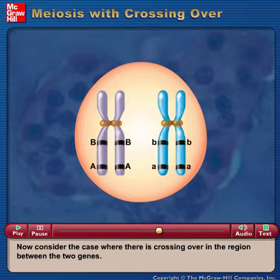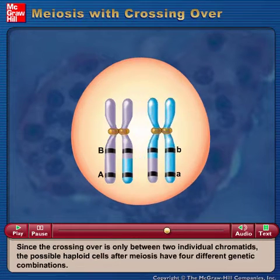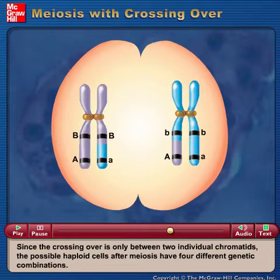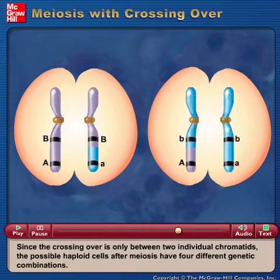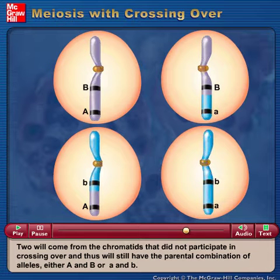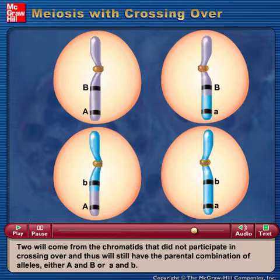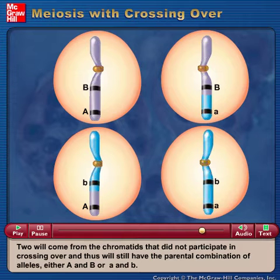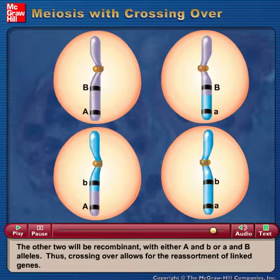Now consider the case where there is crossing over in the region between the two genes. Since the crossing over is only between two individual chromatids, the possible haploid cells after meiosis have four different genetic combinations. Two will come from the chromatids that did not participate in crossing over and thus will still have the parental combination of alleles, either A and B or a and b. The other two will be recombinant with either A and b or a and B alleles.